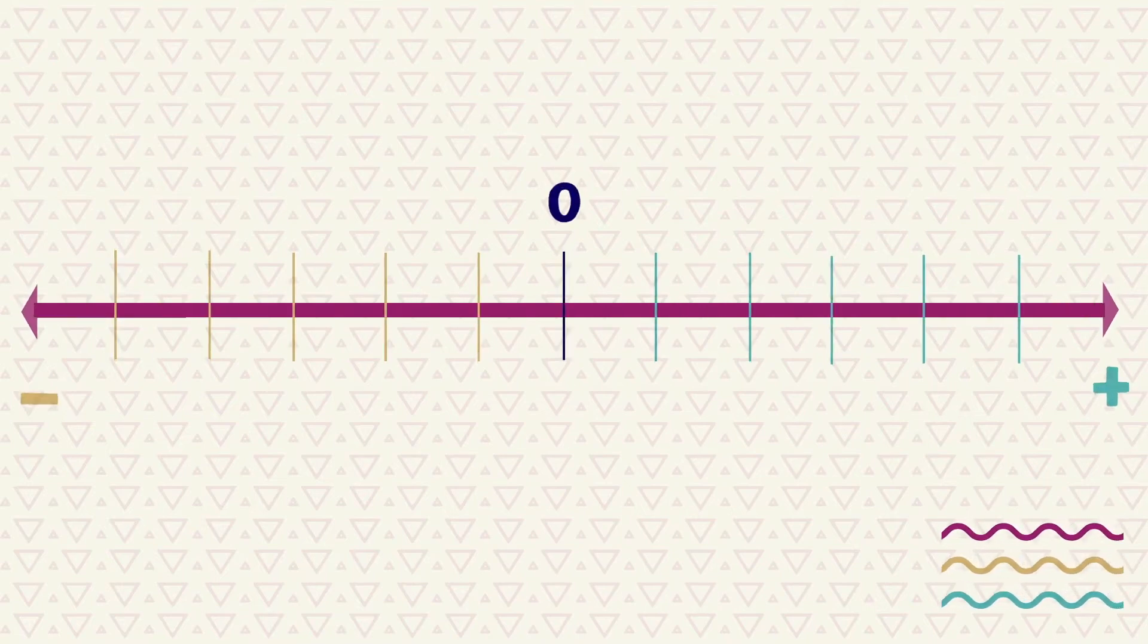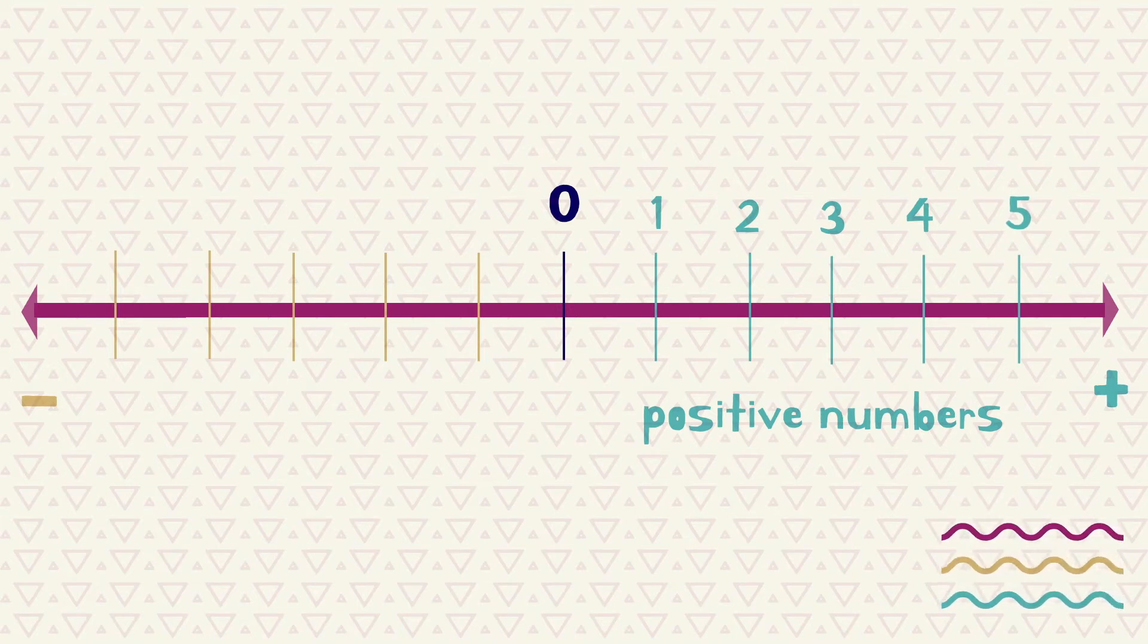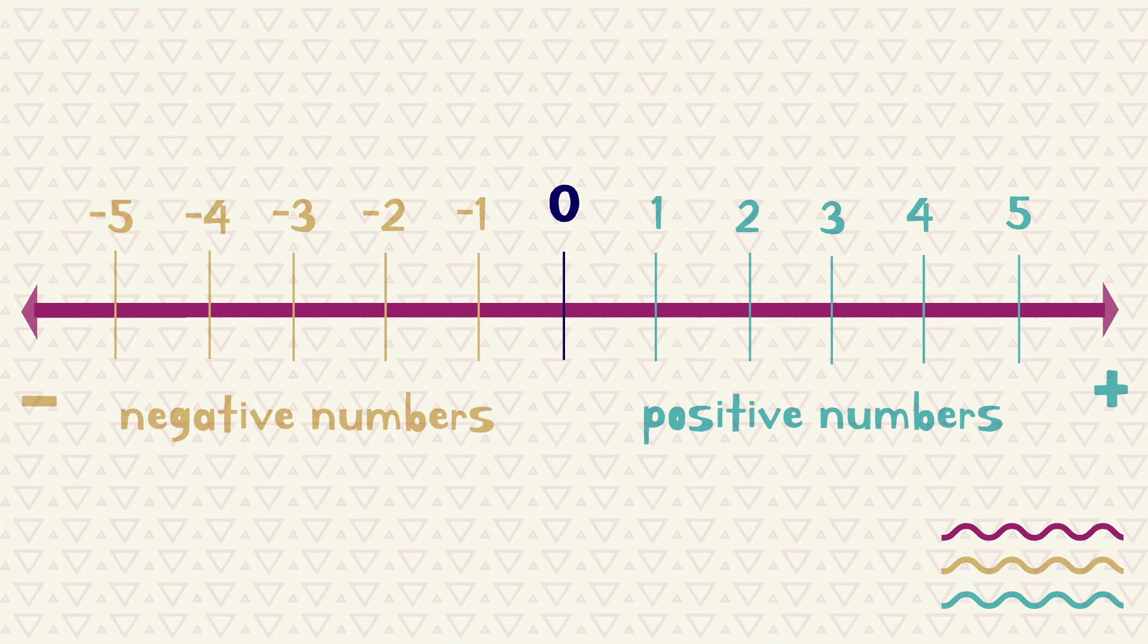Here we have a number line. Positive numbers are numbers greater than zero. Negative numbers are numbers that are less than zero. Negative numbers will have the minus sign in front of them, whereas positive numbers won't always have the plus sign. So if a number has no sign in front of it, it is a positive number.